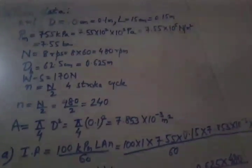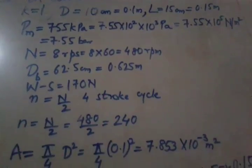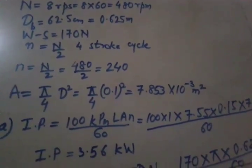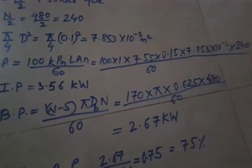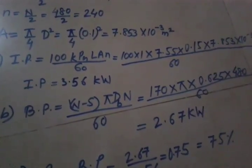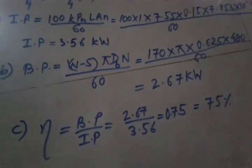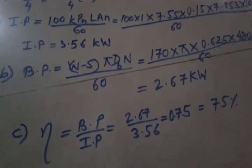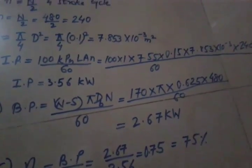So this was the problem which was asked in winter 13. First we calculated small n then we calculated capital A that is area of the cylinder, then we calculated indicated power using the formula, and then we calculated brake power, then we divided by 1000 just to write it in KW, and then we found mechanical efficiency which is brake power upon indicated power so we got 0.75 which is 75 percent. Hope you liked the video, we will again meet in the next video very soon, till then goodbye.